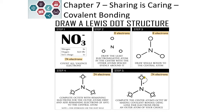The very first step is to count all the valence electrons for each element in the molecule. By looking at the position of the element on the periodic table and the column that it sits in, we can determine the number of valence electrons.